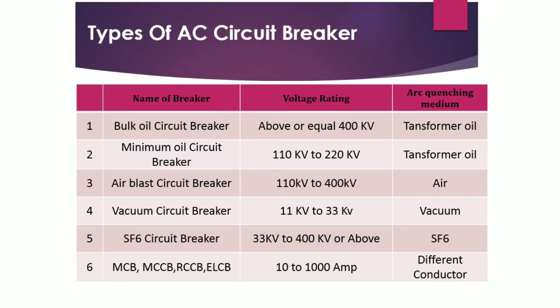Third is the air blast circuit breaker, with a voltage level of 110 kV to 400 kV, using air as the arc-quenching medium. Fourth is the vacuum circuit breaker (VCB), with a voltage rating of 11 kV to 33 kV, using vacuum as the arc-quenching medium. Fifth is the SF6 circuit breaker, with a voltage rating of 33 kV to 400 kV or above, using SF6 gas as the arc-quenching medium.